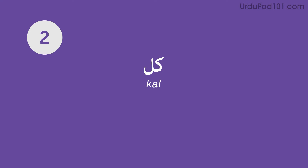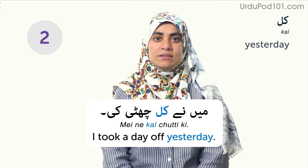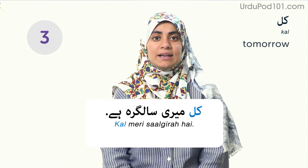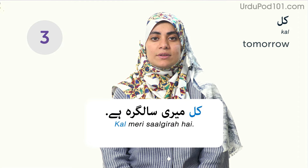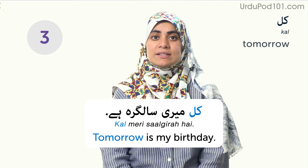Kal — yesterday. Mainne kal chutti ki — I took a day off yesterday. Kal — tomorrow. Kal meri saal gira hai — tomorrow is my birthday. Hafta — week. Aek hafte mein saat din hoote hai — there are seven days in a week.